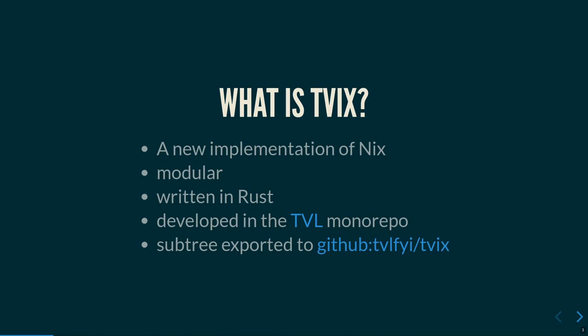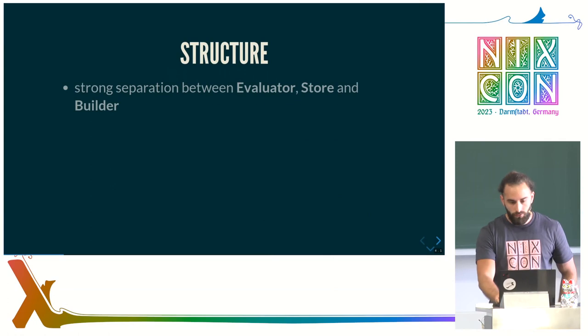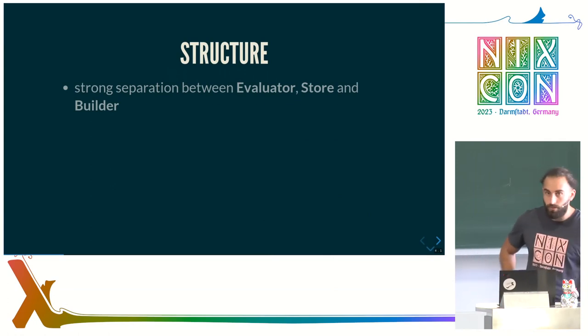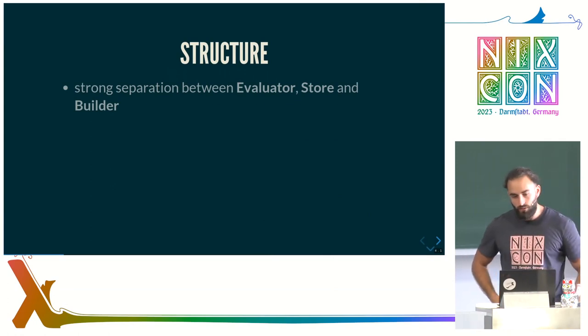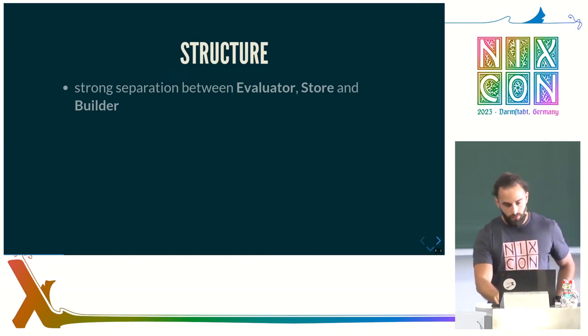Twix is a new implementation in Nix. It is modular, written in Rust. It is developed in the TVL monorepo, and there is a subtree of that on GitHub if you do not want to deal with the full repo. There is a strong separation between evaluator, store, and builder in Twix, and you can plug things out and connect them differently or play with different implementations.